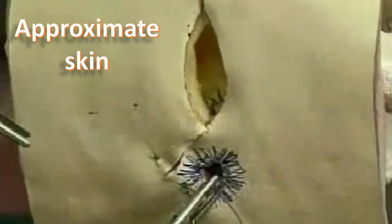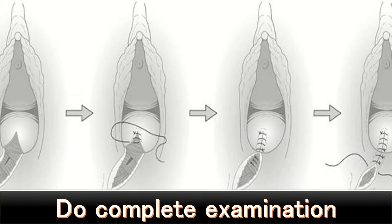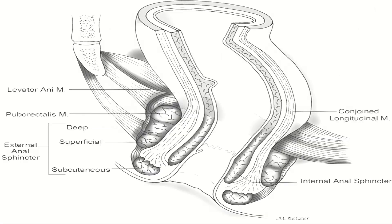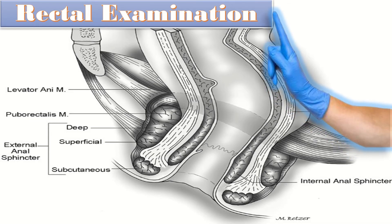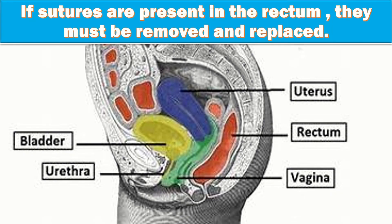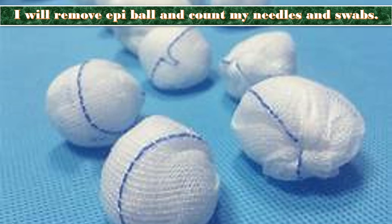At the end of the procedure, I will do a complete examination to look for any genital trauma and repair it. I will perform a rectal examination to rule out accidental involvement of the rectal mucosa or anal canal in the suture. If sutures are present in the rectum, they must be removed and replaced. Then I will remove the episiotomy gauze ball and count my needles and swabs.